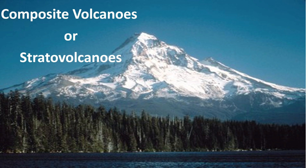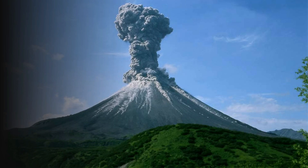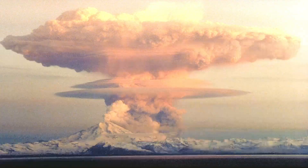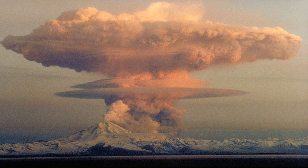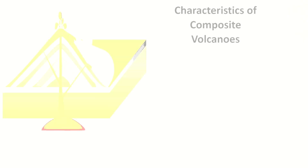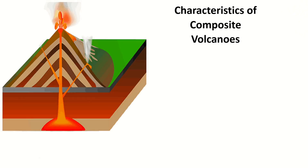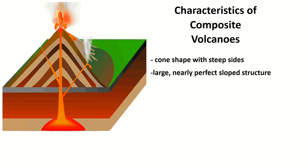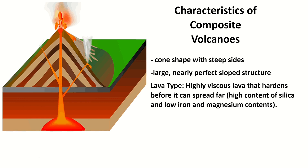The third type of volcano is Composite Volcanoes, also known as Stratovolcanoes. Unlike cinder cones, composite volcanoes are made of a variety of geological materials. They are larger and more violent than cinder cones, but are not as common around the world. Composite volcanoes have a cone shape with steep sides — they are large, nearly perfect slope structures.